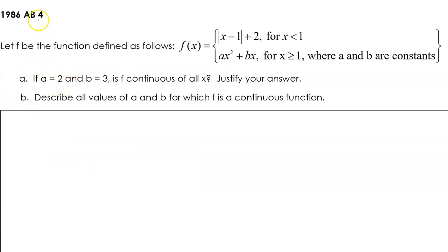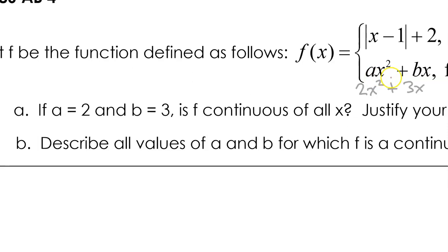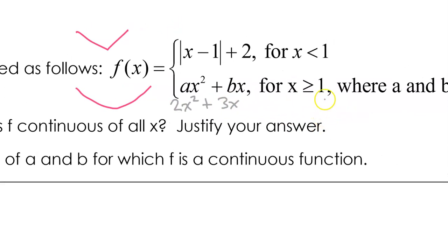Let's do the first two parts of FRQ number 4 from 1986. Function f is a piecewise function where a and b are constants. For Part A, a equals 2 and b equals 3 — is f continuous for all x? With a equals 2 and b equals 3, the second piece becomes 2x squared plus 3x. The first piece is an absolute value function, which is continuous everywhere, and the second is a polynomial, also continuous everywhere. So the only concern is at x equals 1. The left-hand limit must equal the right-hand limit.